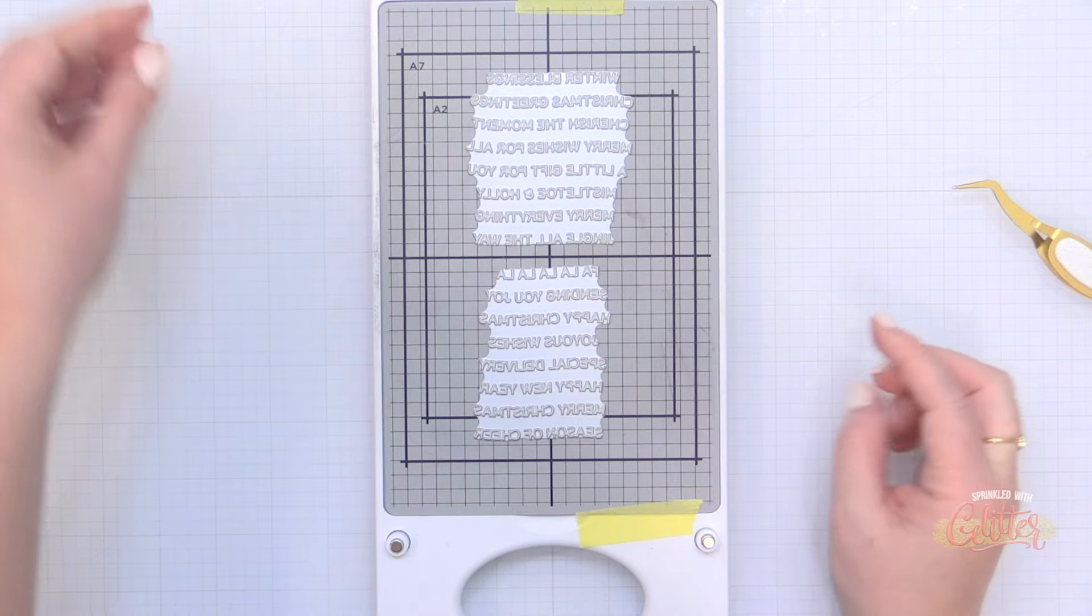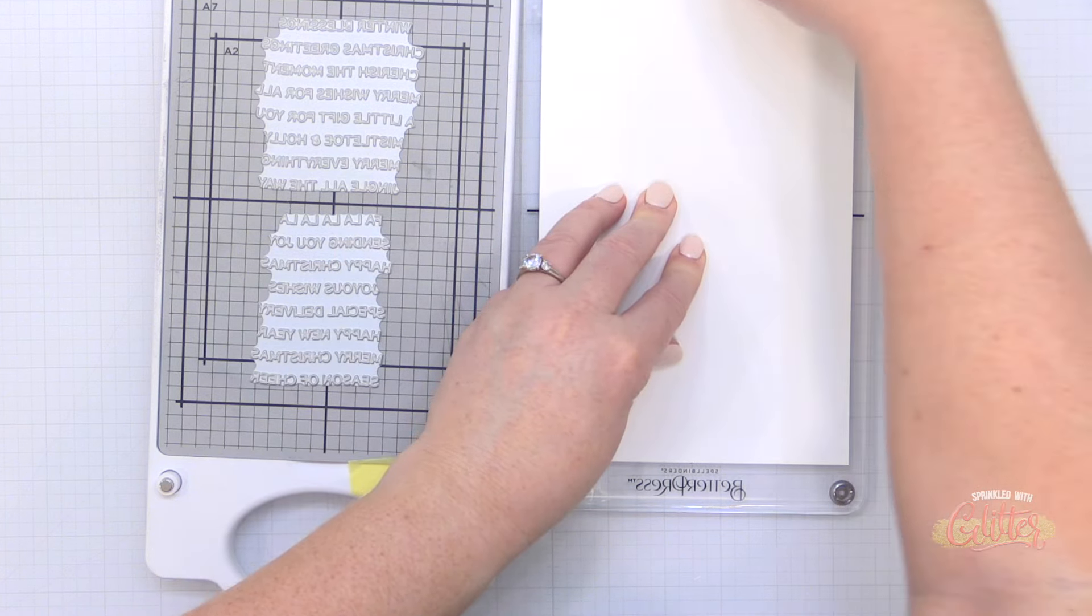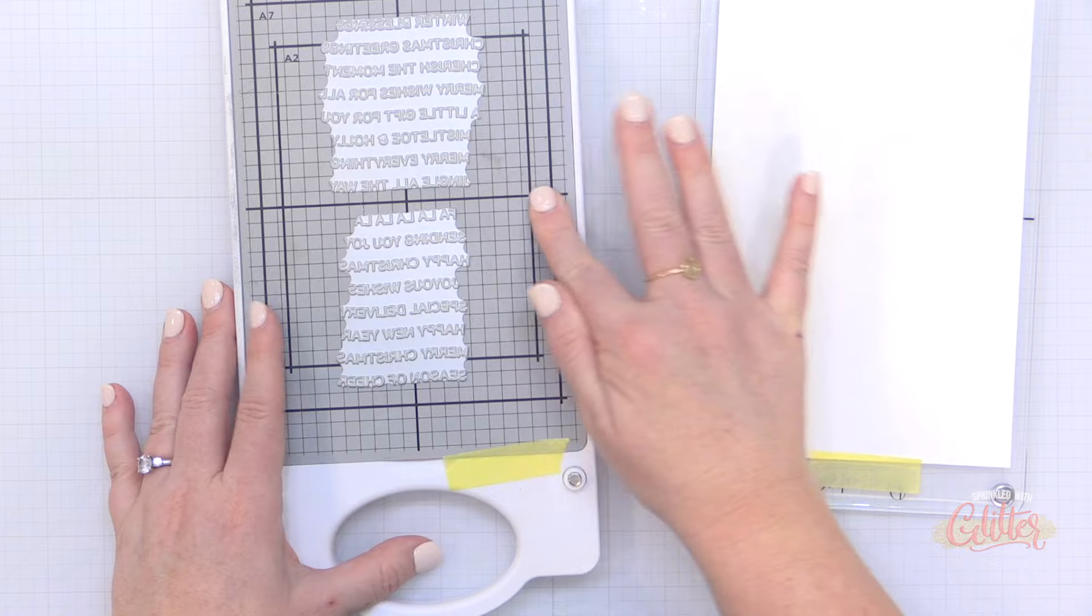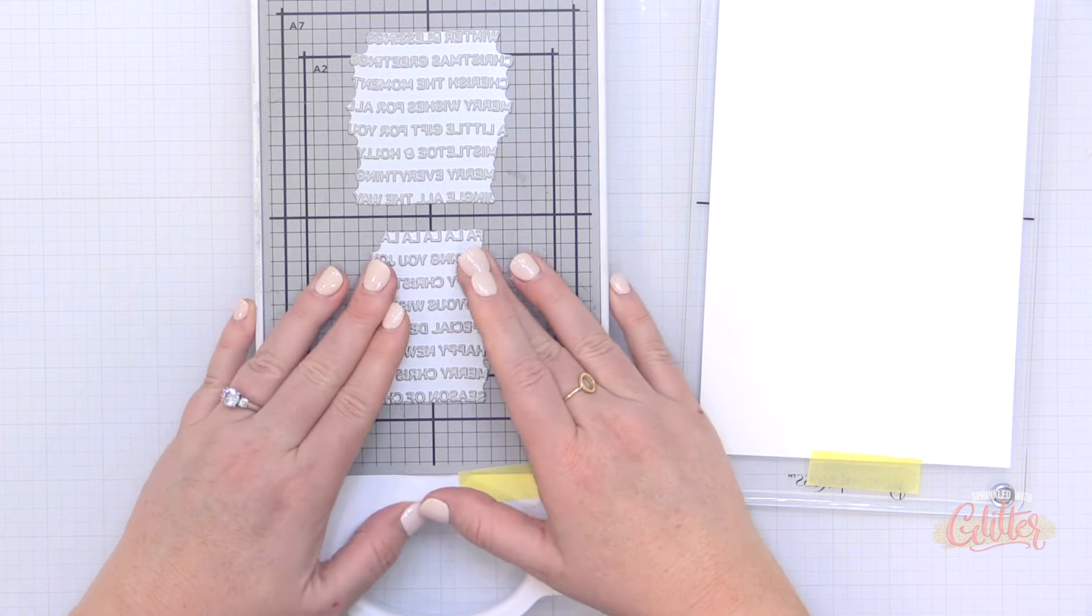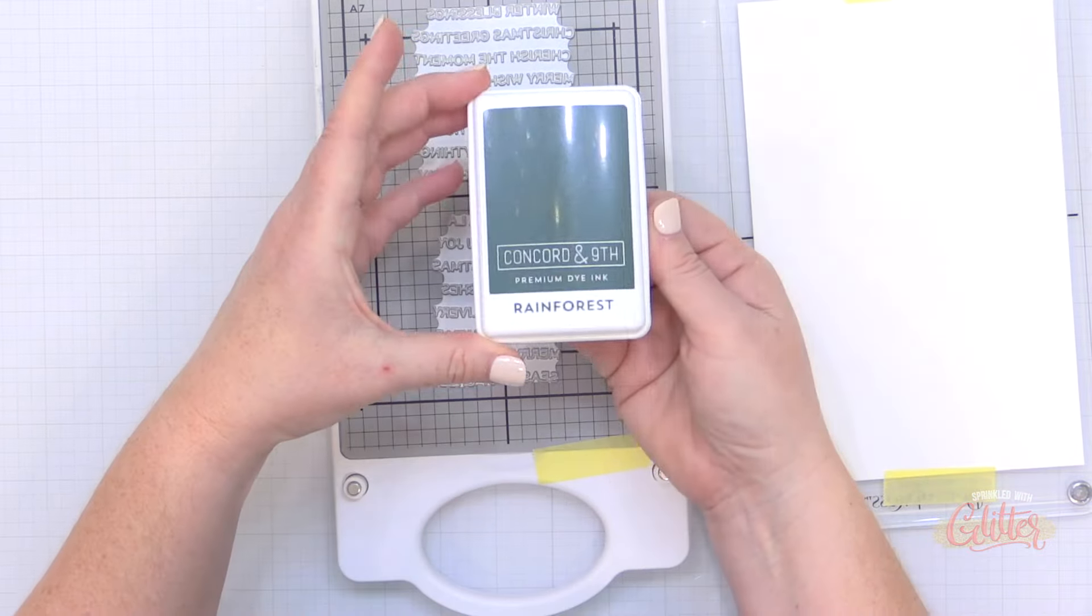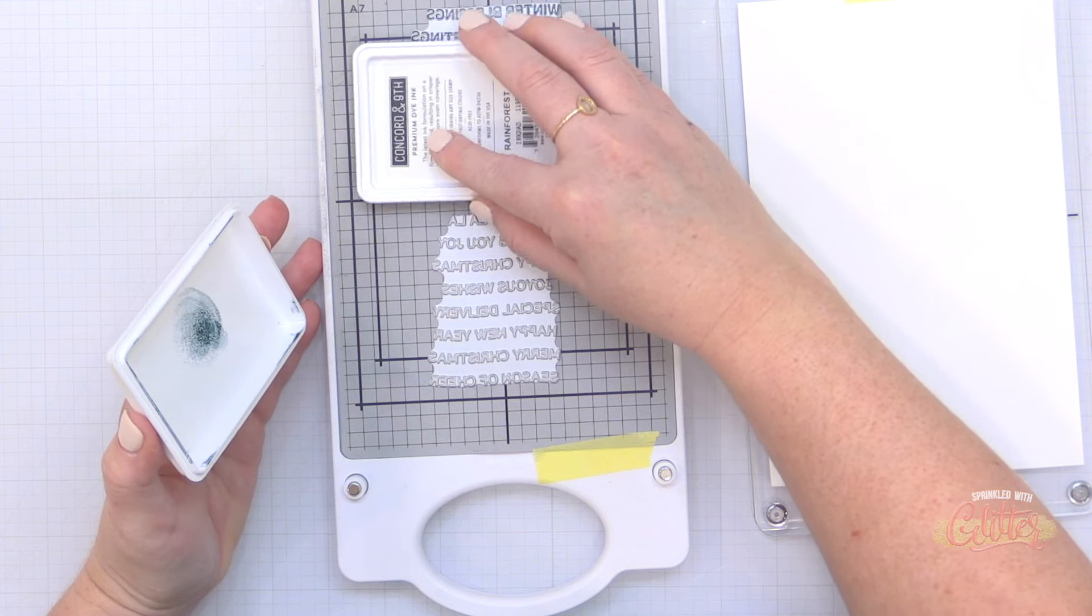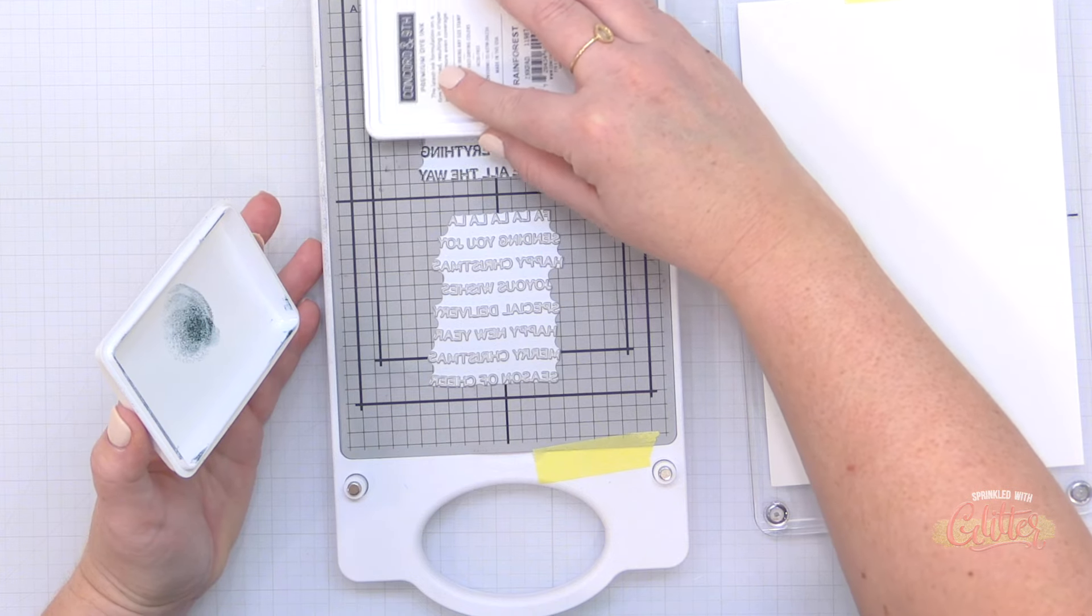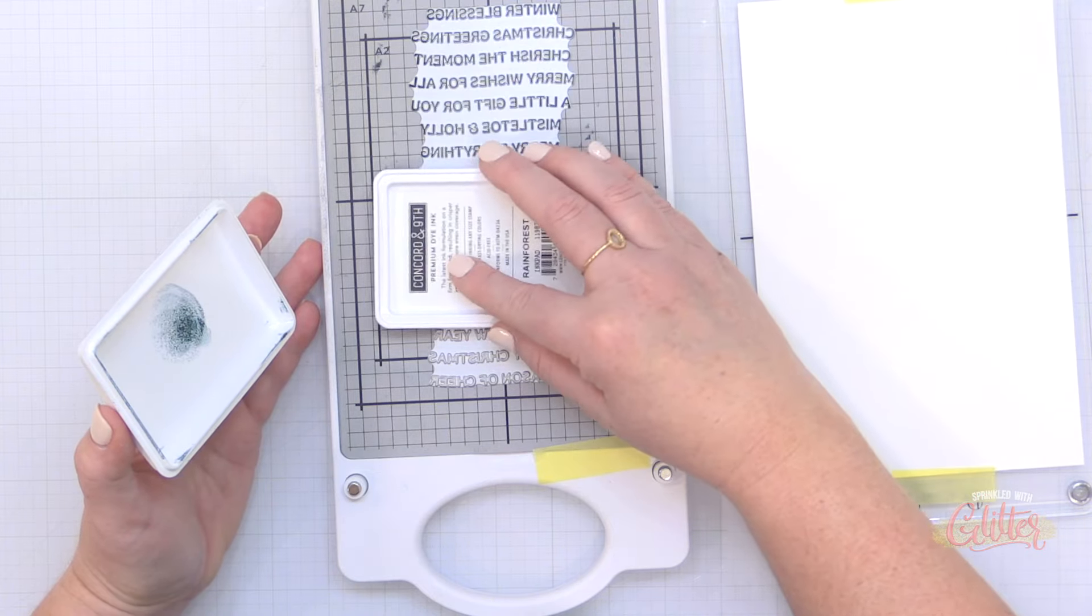Now this includes several greetings that you can press using your better press system all at once but keep in mind that better press plates are also compatible with your hot foil machine so you get a lot of different looks out of the same product. And this includes the coordinating dies to create these sentiment banners. So I'm lining up both of the little greeting sets from the mistletoe greetings better press plate set on my better press platform and I'm inking them up using the Concord and Ninth Rainforest ink and I'm going to press them onto some better press cardstock in the color Porcelain.